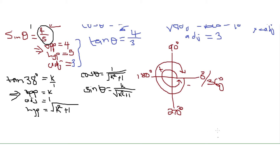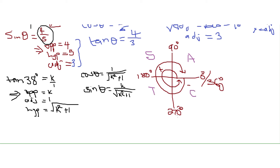Reduction formulas tell us the ASTC rule: All ratios are positive in the first quadrant, only Sine is positive in the second quadrant, only Tan is positive in the third quadrant, and only Cos is positive in the fourth quadrant. When they say 180 minus theta — and remember theta is not greater than 90 — it means we moved from 0 to 90 to 180, then minus means we go backwards. Since theta is less than 90, it lands in the second quadrant.